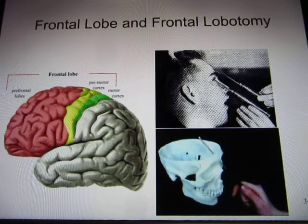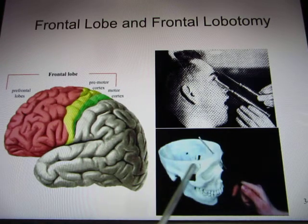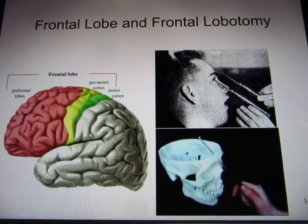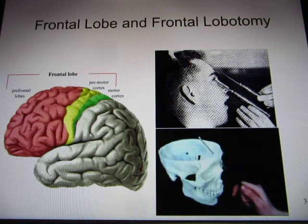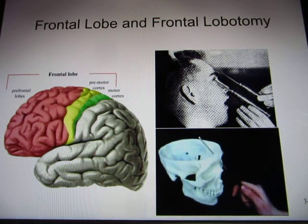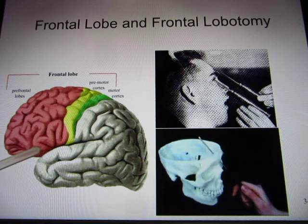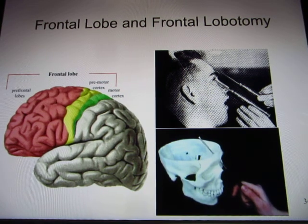Another story about the prefrontal cortex: in the 20th century there was a surgery called lobotomy, where a knife was inserted through the orbit to damage the prefrontal cortex. The original intention was to treat patients with anger management problems, and after surgery people became very calm. The surgeon who invented it actually received a Nobel Prize. It took people a while to realize that after lobotomy patients had serious side effects, and the surgery is no longer performed. So again, the frontal lobe's prefrontal cortex is responsible for high-level reasoning and decision-making.